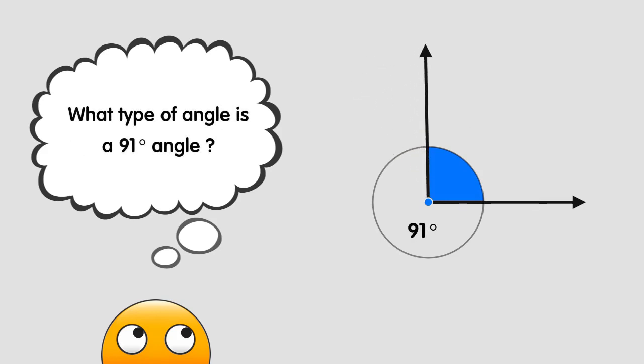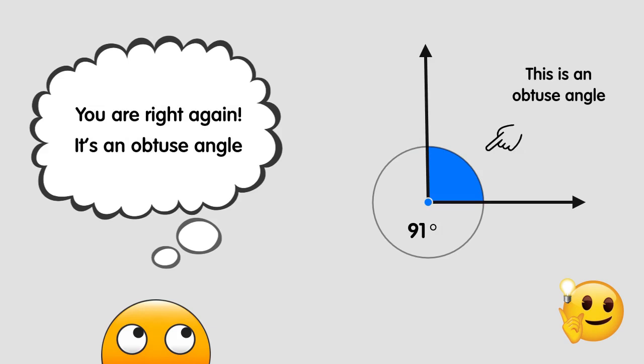What type of angle is a 91 degree angle? You are right again, the answer is an obtuse angle.